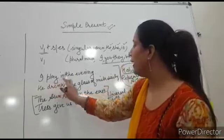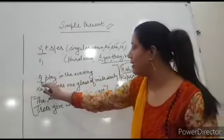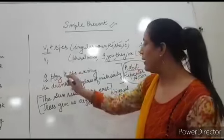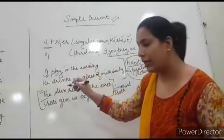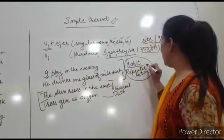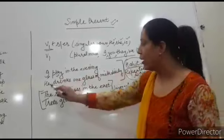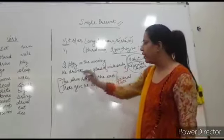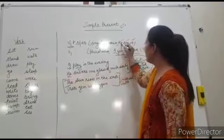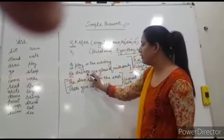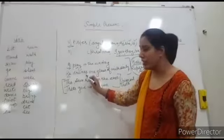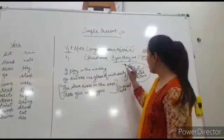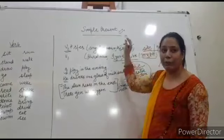Suppose, I play in the evening. Because I is there, look, when I/you/they/we is there, we are using only V1. I play in the evening. It is your habit that you play in the evening. He drinks one glass of milk daily. It is also habit. He, when he is there, it is singular, so we use V1 plus S: drinks. When habit is there, we always use simple present tense.